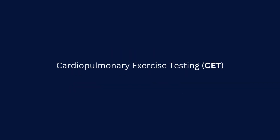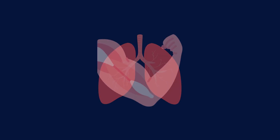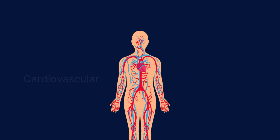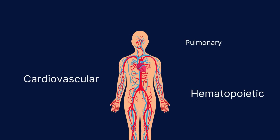Cardiopulmonary exercise testing evaluates how well your heart, lungs, and muscles work individually and in unison. CPET is performed while the patient engages in progressively increasing workloads on a stationary bike or treadmill. As a comprehensive measure of exercise physiology, it helps quantify various muscle responses to exercise.